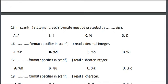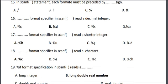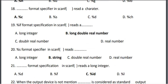Seventeenth, the %h format specifier in scanf reads a short integer. The correct answer is option A, %h. Eighteenth, the %c format specifier in scanf reads a character. The correct answer is option A, %c.